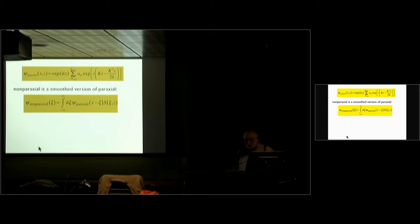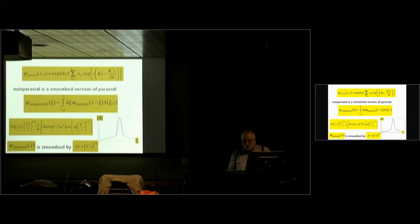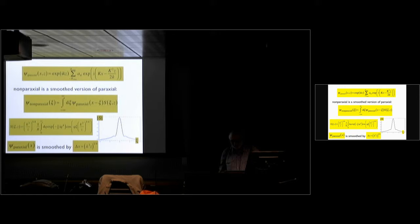The smoothing function involves the quartic term and you have to use the wave equation to calculate it. What is this smoothing function? Well, there it is — it's a blurring — and one wants to know how substantial that blurring is. It turns out from the scaling law that the paraxial wave is smoothed by distance Δx which is wavelength to the three-quarters times z to the one-quarter. So the farther you go, the more that non-paraxiality smooths fine detail. No surprise there.